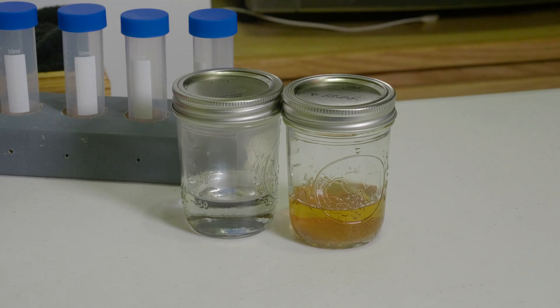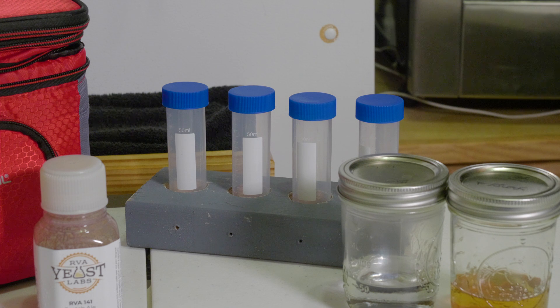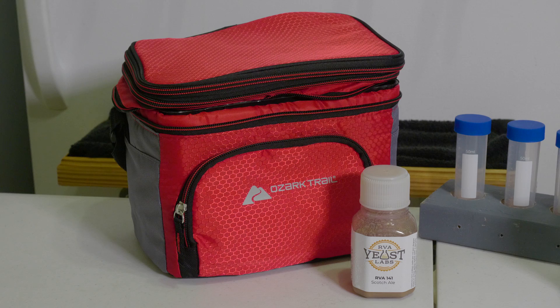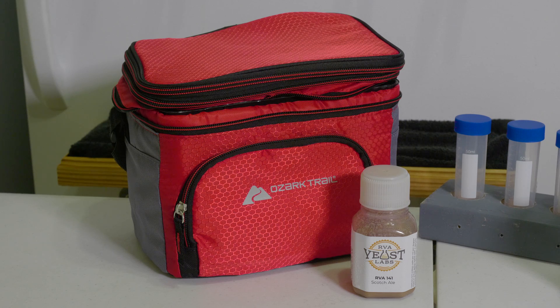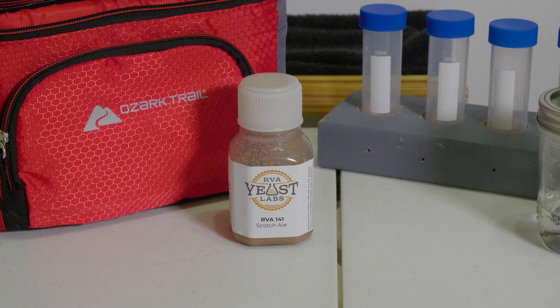We have 1020 wort as well as glycerin. I pressure can this up so it's sterile before I use it. We have 50 milliliter vials, which I got on Amazon. Then we have some sort of cooler you're going to put in your freezer. Pretty much anything will do. And then we have the yeast. I like to use RVA yeast from RVA yeast labs.